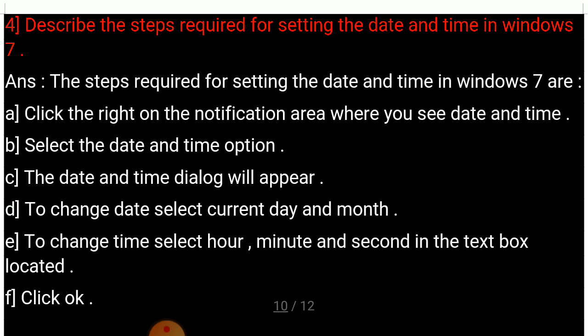Now question number 4: Describe the steps required for setting the date and time in Windows 7. A: Right-click on the notification area where you will see the date and time. B: Select the date and time option. C: The date and time dialog box will appear. D: To change the date, select the current day and month. E: To change the time, select the hour, minute, and second in the text box. F: Click OK.